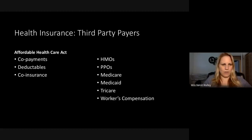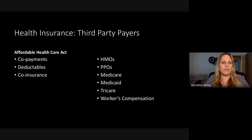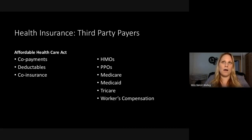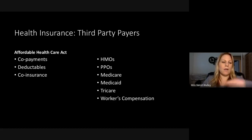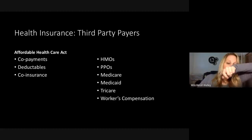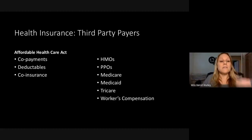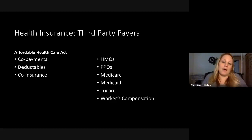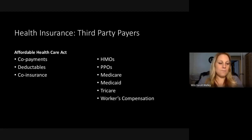Some of the key terms from chapter two include copayments, deductibles, and coinsurance. Copayments are things you pay out of pocket when you go to the doctor — your copay might be $20, and the insurance pays 80%, like $80. A deductible is something you have to pay upfront before they'll start paying, and it can range anywhere from $400 to thousands of dollars. Coinsurance is the percentage you're going to pay based on your plan.